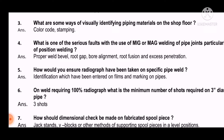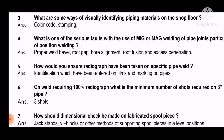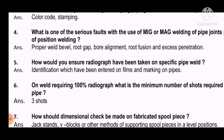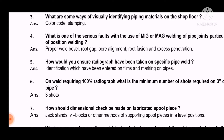Question 5: How would you ensure radiographs have been taken on a specific pipe weld? The answer is: identification which has been entered on film and marking on pipes. As a welding QC, we also need to cover the NDT part.